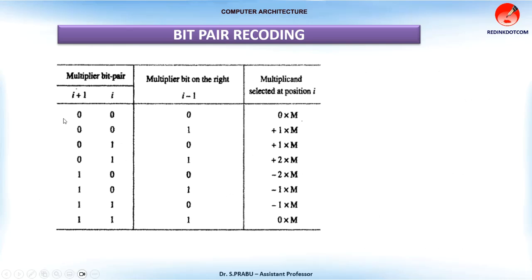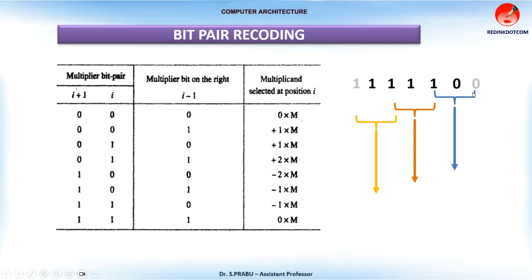Therefore, we move to 2-bit pair recoding. Here, two numbers are compared with the previous one to produce the corresponding recoded value. For your multiplier number, introduce one extra bit q0 as 0, and one more bit on the left-hand side as the sign extension bit — write 1 if the sign bit is 1, or 0 if it is 0. Then group the number in groups of 3 from right to left. For example, 1,0,0 is minus 2; 1,1,1 is 0; and another 1,1,1 is 0. So this is the recoded value.